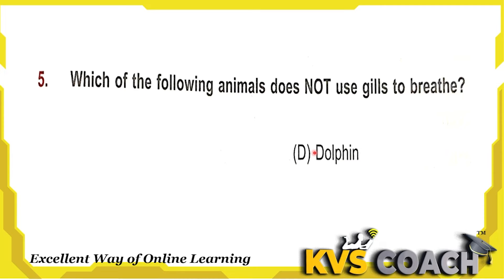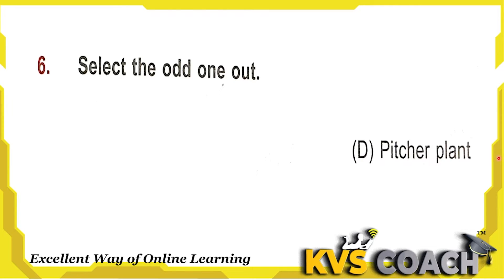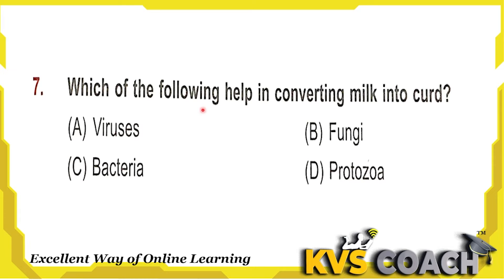Next question: select the odd one out — A is fern plant, B is spurge, C is dodder, and D is pitcher plant. Among all these plants, pitcher plant is an insectivorous plant that traps insects and eats them. So the odd one out is pitcher plant, option D.